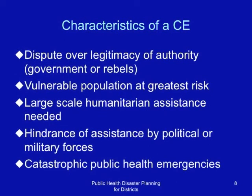There is often dispute over legitimacy of authority, usually between government and other formal or informal groups, like rebels, insurgents, etc. The vulnerable population is at greatest risk. Large-scale humanitarian assistance is often needed. There is usually hindrance of assistance by political or military forces, meaning that some groups that have power may prevent others from receiving assistance.